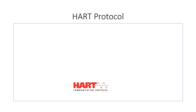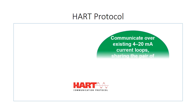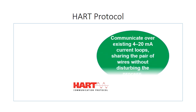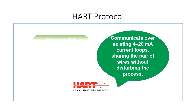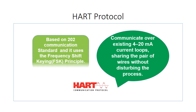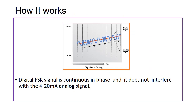The most important advantage of HART is that it can communicate over existing 4 to 20 milliampere analog current loop, sharing the pair of wires without disturbing the process. HART is based on the Bell 202 communication standard and it uses the phase shift keying (FSK) principle.